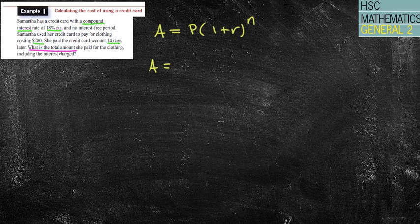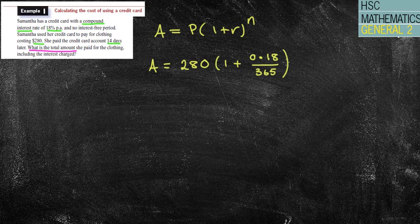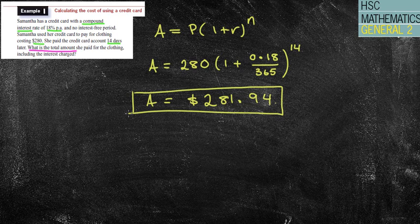I'm now going to put in, I've got my principal amount. That's how much that I've borrowed. And remember, we've paid $280 worth of for the clothing. So we've borrowed that amount of money. 1 plus, now, my interest rate in this particular case is not put as per day yet. So it's actually per year. So now I need to put it over 365. That gets me in terms of for days. And it's for 14 days. And now I need to put that into my calculator. And I come up with a total amount of $281.94. Therefore, that's how much that I am being charged altogether. Just be careful, of course, if you're using this simple interest formula, if it has asked you to. That calculates the interest, not the total amount owing. So just be a little bit careful.